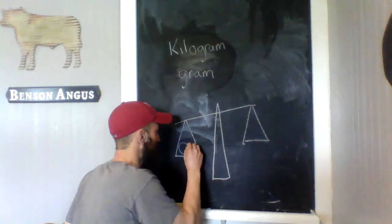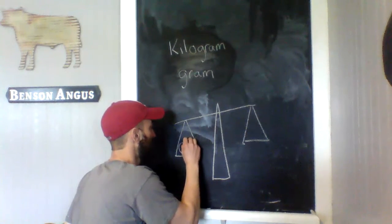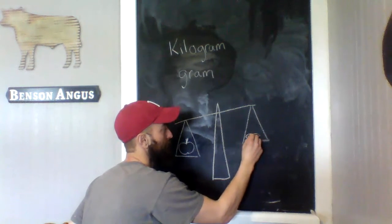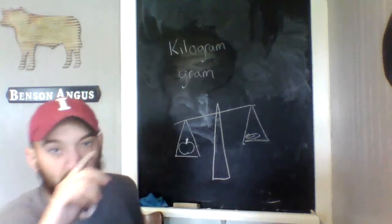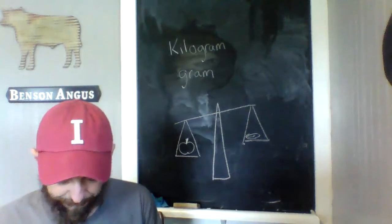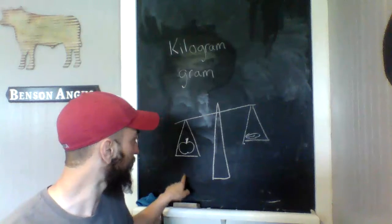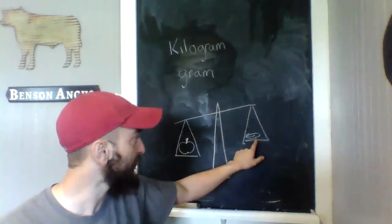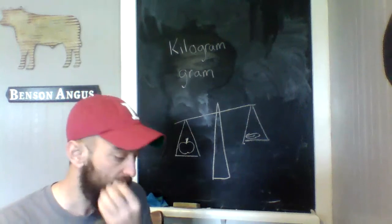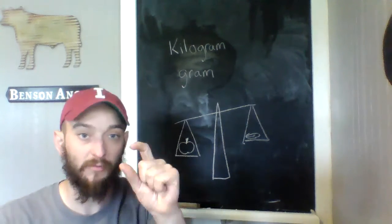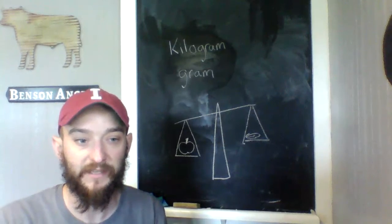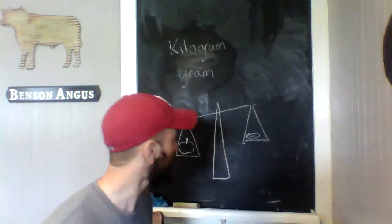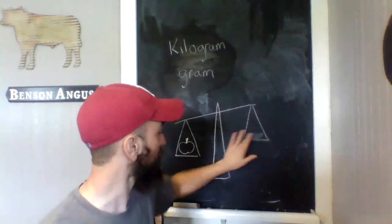You compare your two items. My apple is obviously pulling down on this side because it's heavier than the paperclip. One way we can use these is by putting little weights on. We're far from school right now, so I would have a bunch of scales and we'd be able to weigh stuff, but that's not going to happen. Let's say I put some weights on this side and my weight says this weighs 10 grams.